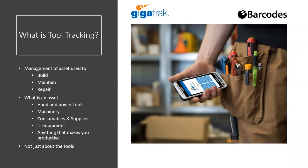Many people are familiar with asset tracking. There are a lot of asset tracking solutions in the market. In a business environment, assets are typically things like desks, chairs, and PCs, and it's very common to manage them with an asset tracking solution. So what is tool tracking? The processes are pretty similar, but the items tracked and the landscape they're tracked in are often varied.